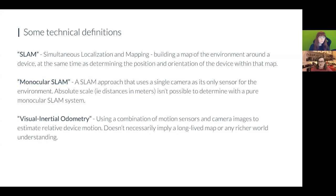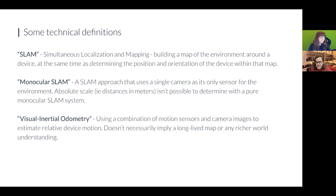With a single camera SLAM system, absolute scale isn't actually determined. You can imagine moving a device around a room versus moving it around a scale model of the room — the camera images would look identical, so there isn't enough information in the camera images alone to work out scale. Visual-inertial odometry is another option in the world tracking space, where you leverage the combination of motion sensors in devices along with images from the live camera view, fusing that data together. That does allow scale to be worked out as long as the camera moves.